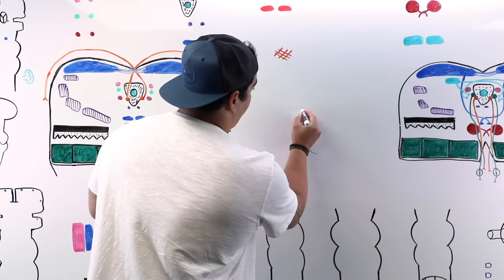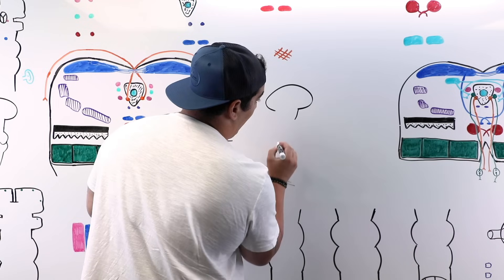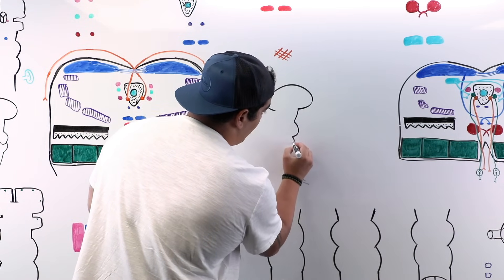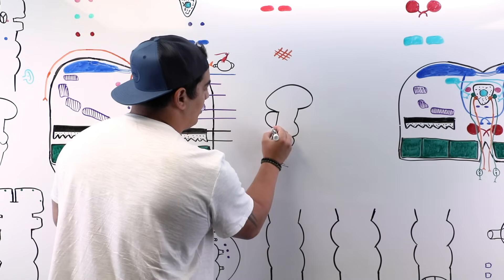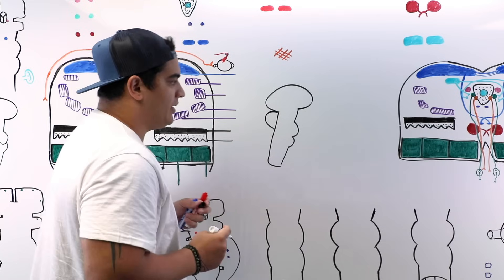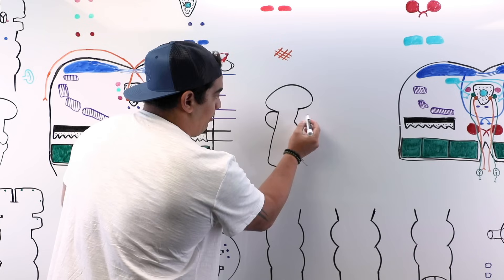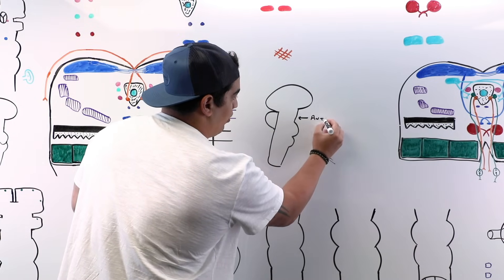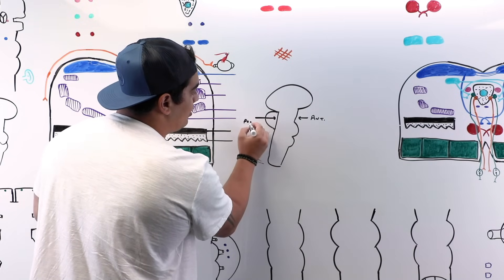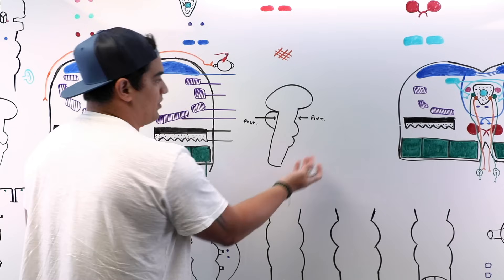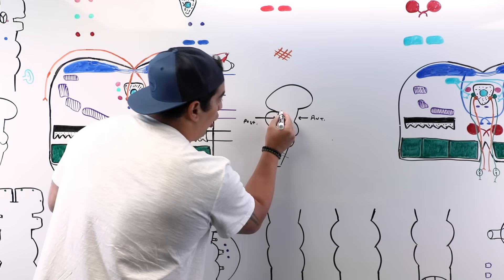Drawing a sagittal section: we have the cerebrum, the midbrain, the pons, the medulla, and then part of the spinal cord, plus the cerebellum. The anterior portion of the midbrain is here, and the posterior or dorsal portion is in the back.